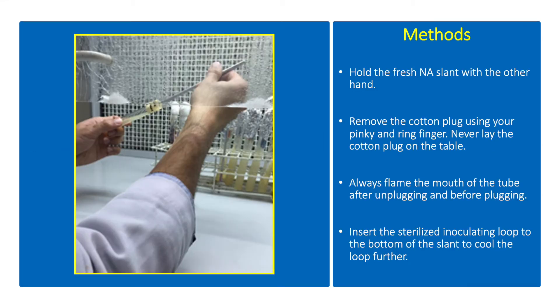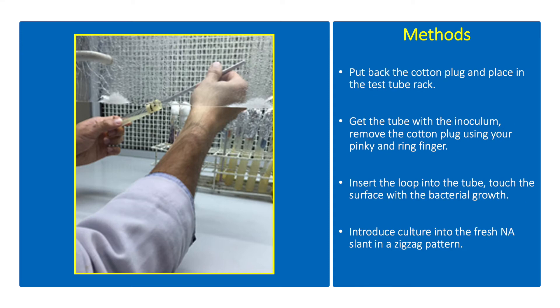Hold the fresh NA slant with the other hand. Remove the cotton plug using your pinky and ring finger. Never lay the cotton plug on the table. Always flame the mouth of the tube after unplugging and before plugging. Insert the sterilized inoculating loop to the bottom of the slant to cool the loop further. Return the cotton plug and place in the test tube rack. Get the tube with the inoculum.